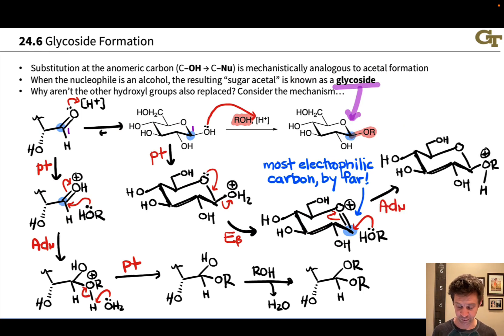This produces the protonated glycoside. Notice the only difference between this and the final product is an extra proton on the OR group. And so we lose that proton in the final step to get to the neutral glycoside, which is again, essentially an acetal of the sugar where an alcohol nucleophile has essentially displaced water in the product.